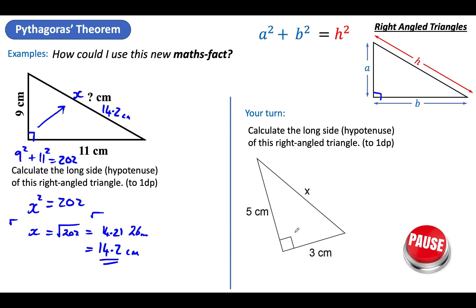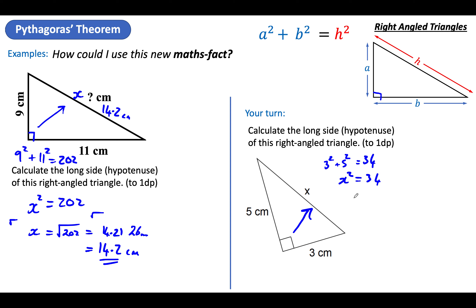Your turn. Here's a right-angled triangle — that's the longest side. Square, square, add, square root. Go. So: 3 squared and 5 squared and add them together, which is 34. That is the same as the long side squared. To find what that long side is, I just square root it. Square root of 34 — just literally type it in, let the calculator do the work. To one decimal place, that would be 5.8 centimetres. Well done to those who got that.